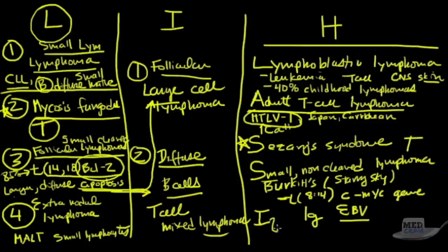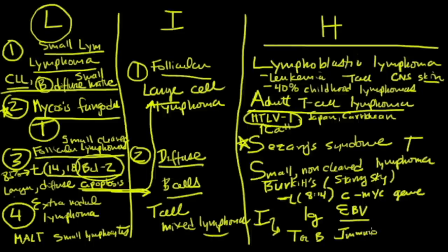The last one is immunoblastic lymphoma. These can be T cells or B cells. Typically, they've got about a 50% cure rate, 50% from an immunological disorder of some sort. It could be from non-Hodgkin's lymphoma as well. Just remember that I is immunoblastic.